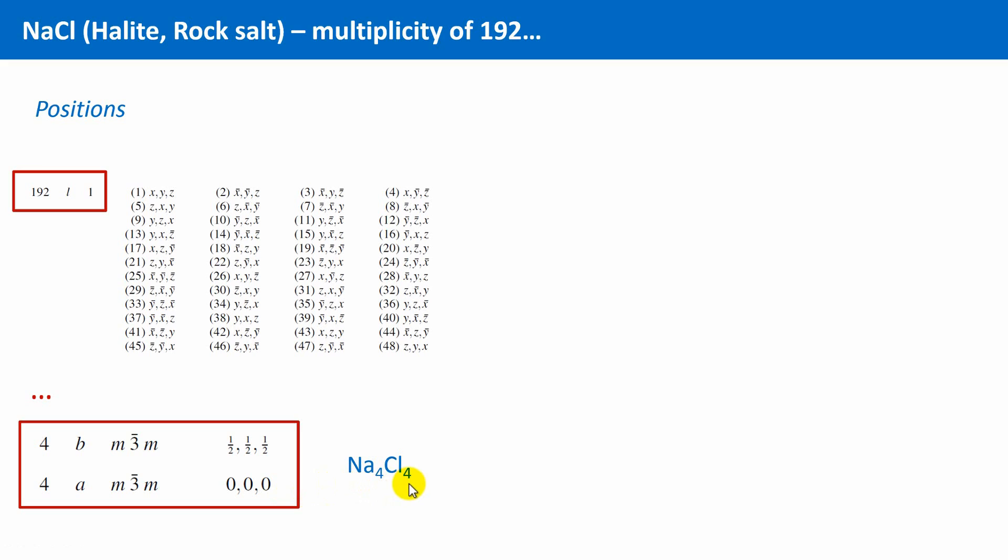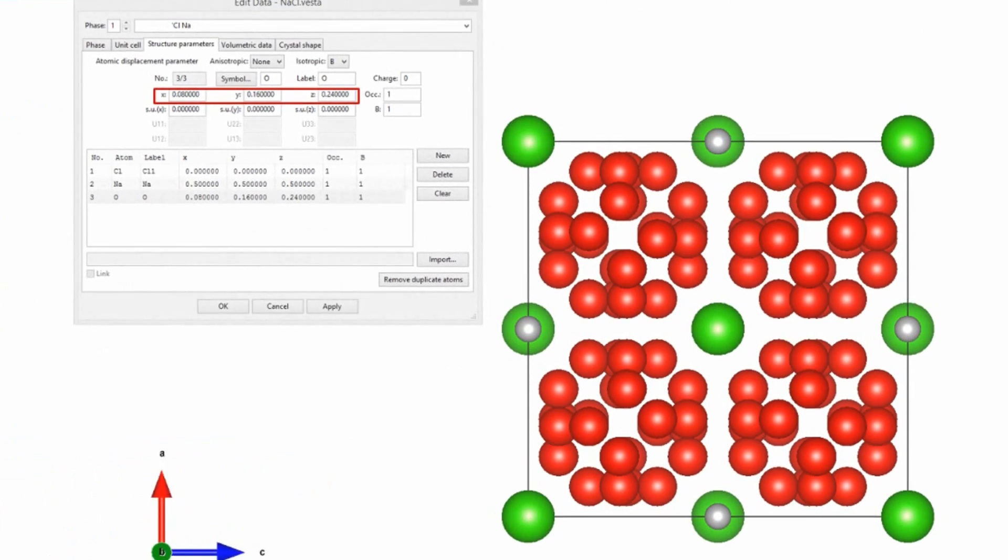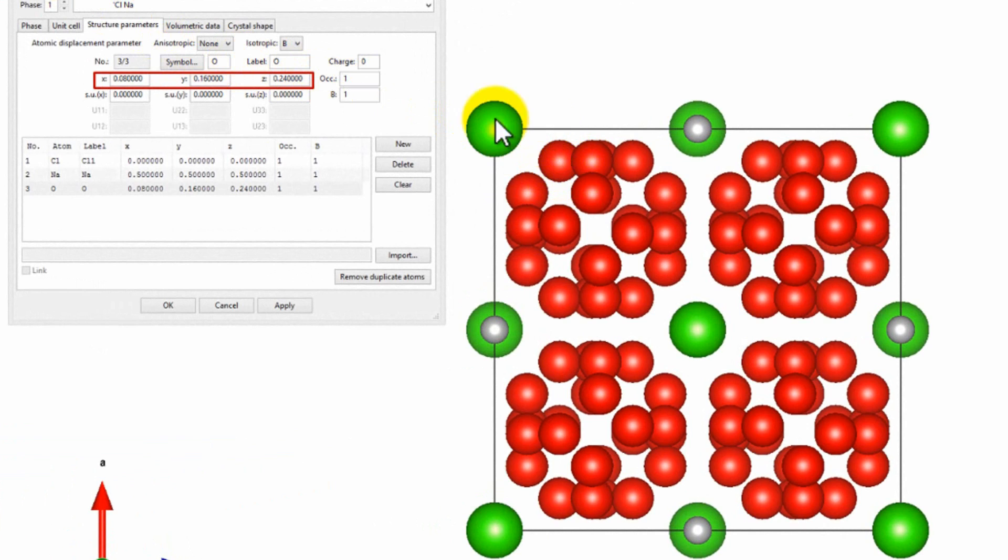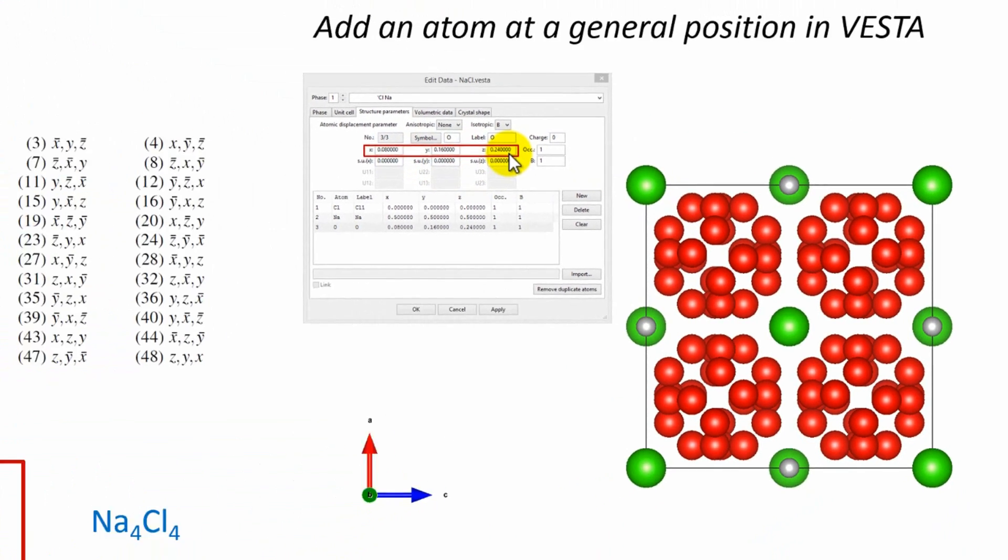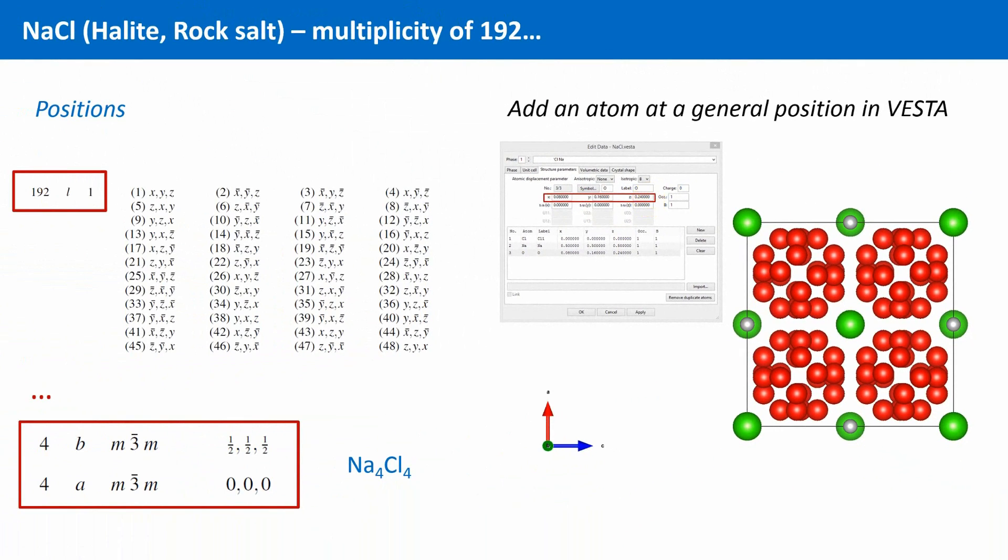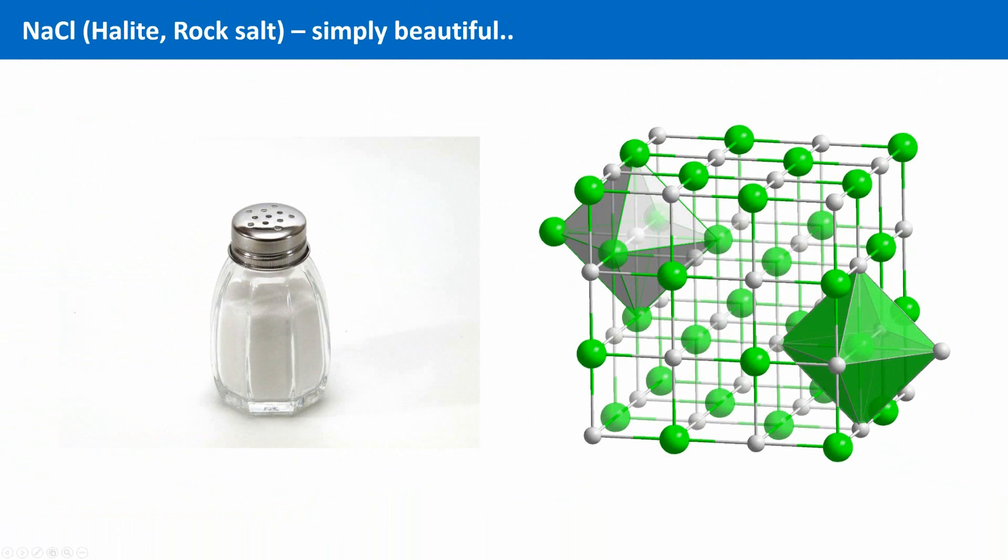What I can recommend to feel the right spirit of a multiplicity of 192 is, open VESTA, and add an atom at a general position. And play with the different concrete fractional coordinates. Here you can see the result of an extra atom at the position 0.08, 0.16 and 0.24. Go for it! And next time you use table salt in your kitchen, think about the beauty inside these little salty crumbs.